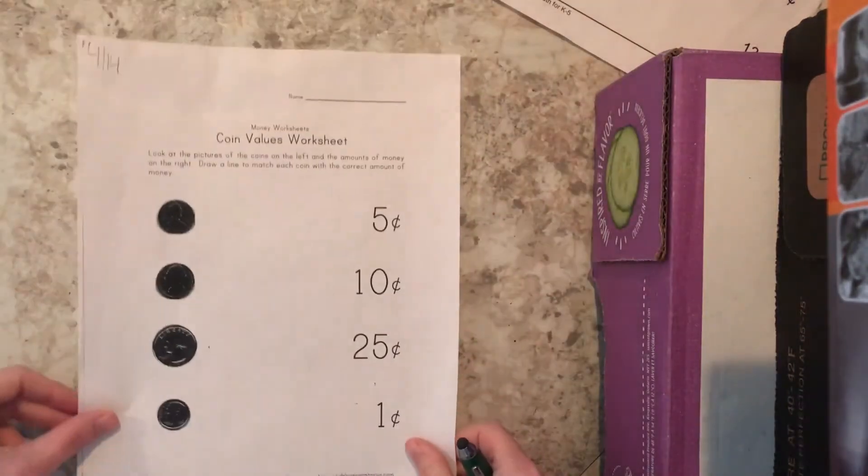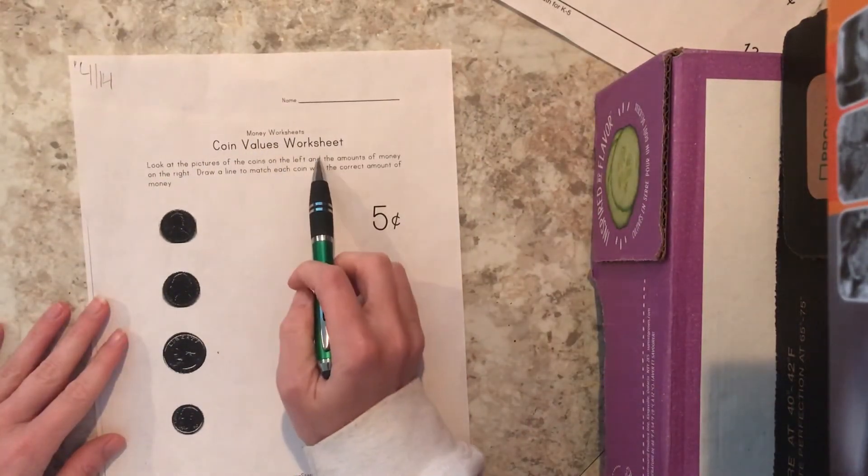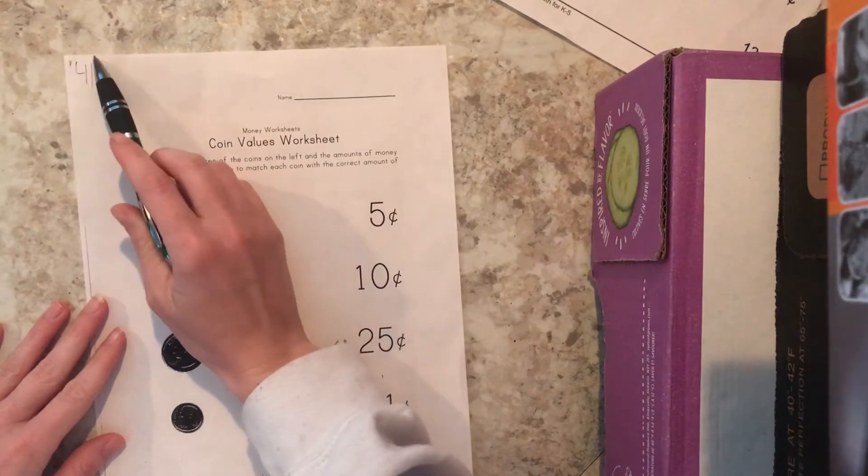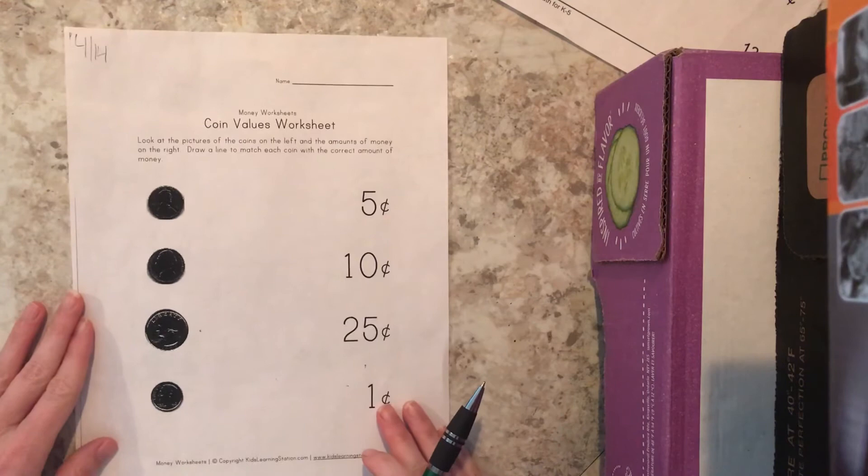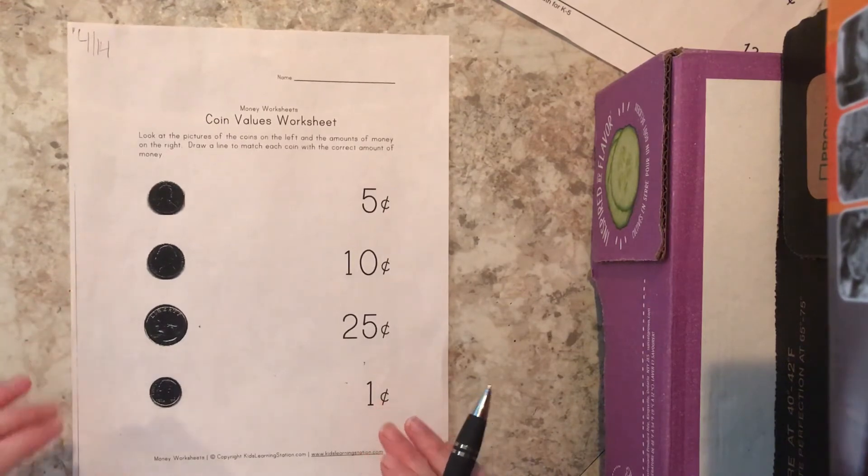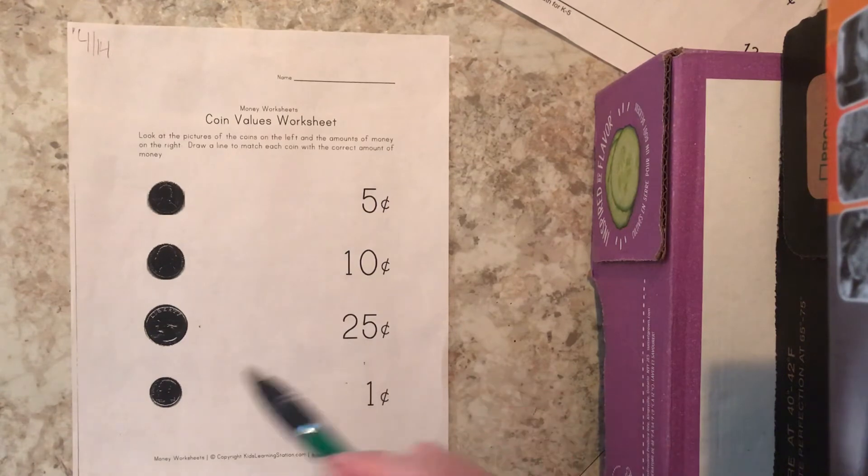It has four line one four at the top. I need you to get that worksheet out. It might be easier for you to get the coins out that we had last week and put them on the coins on the worksheet.